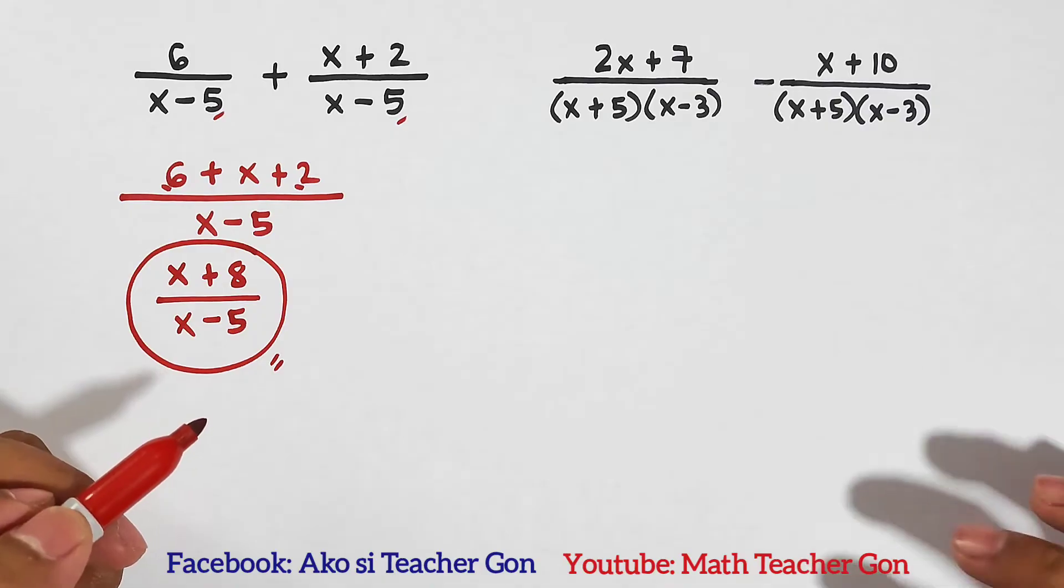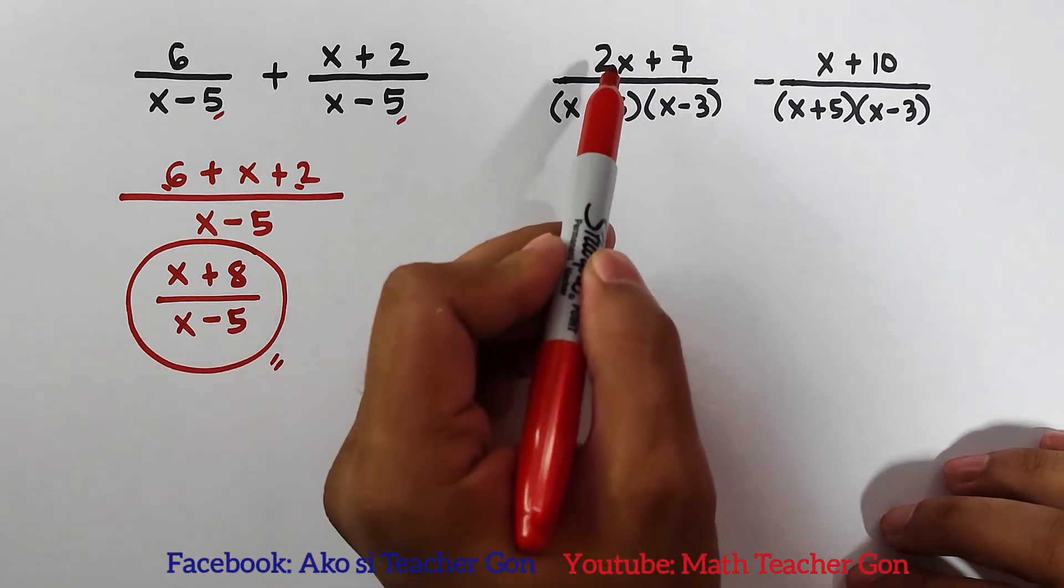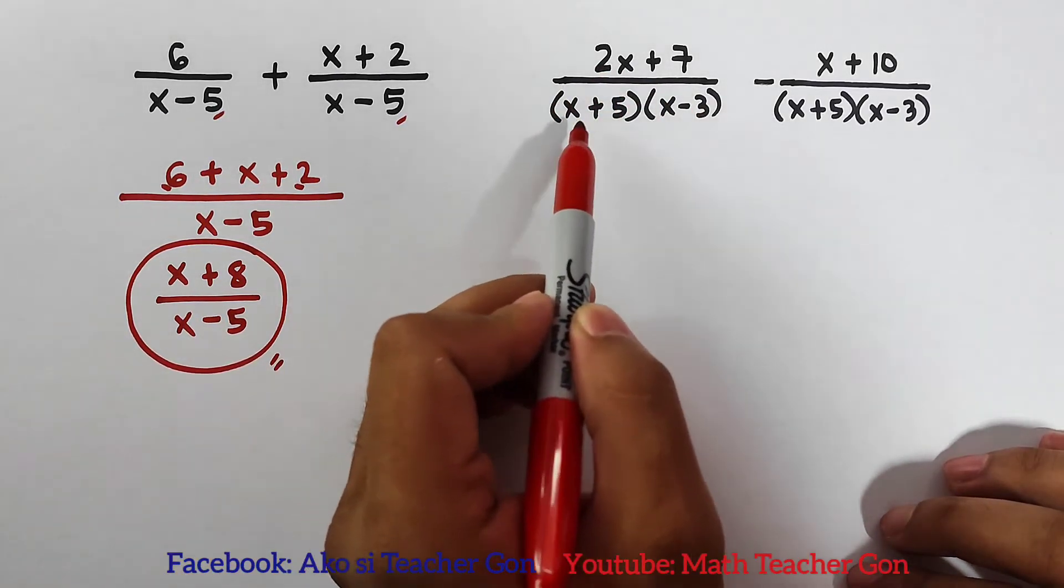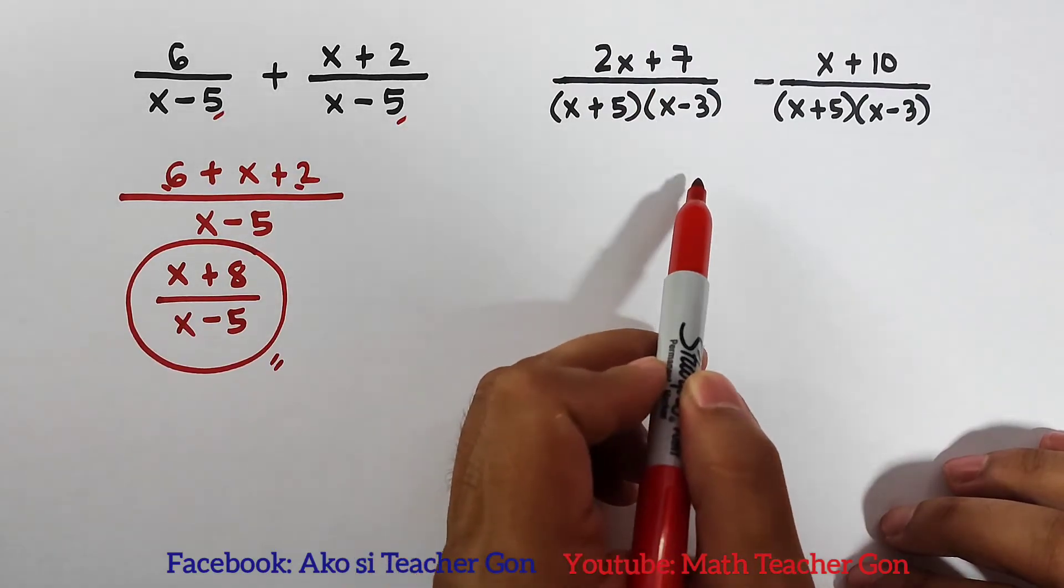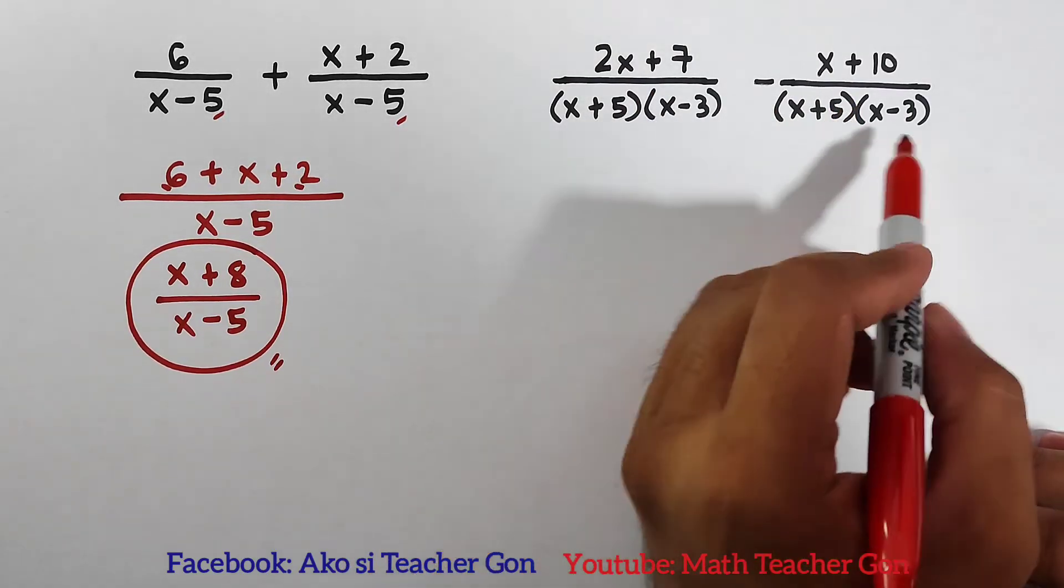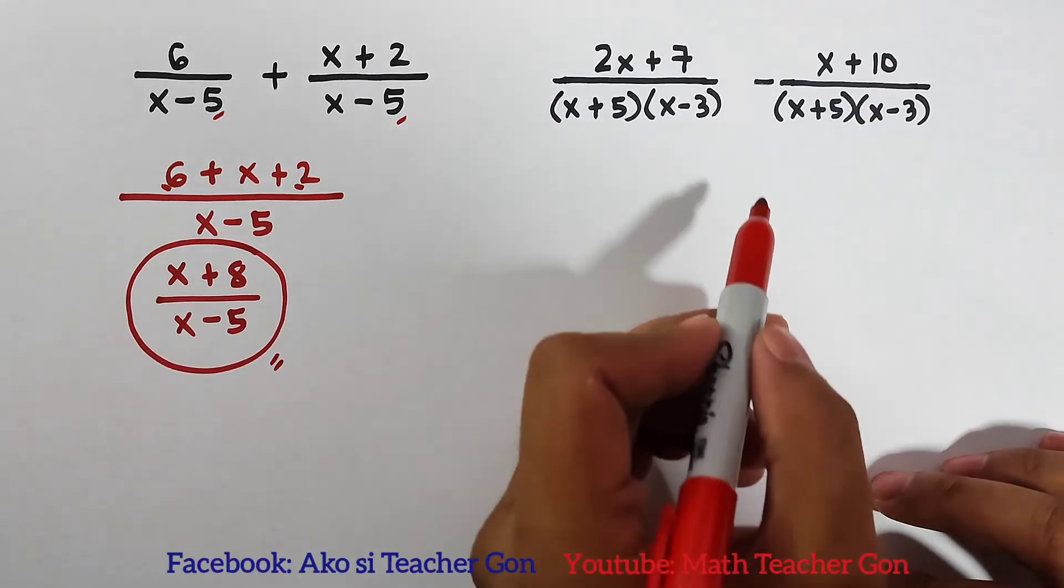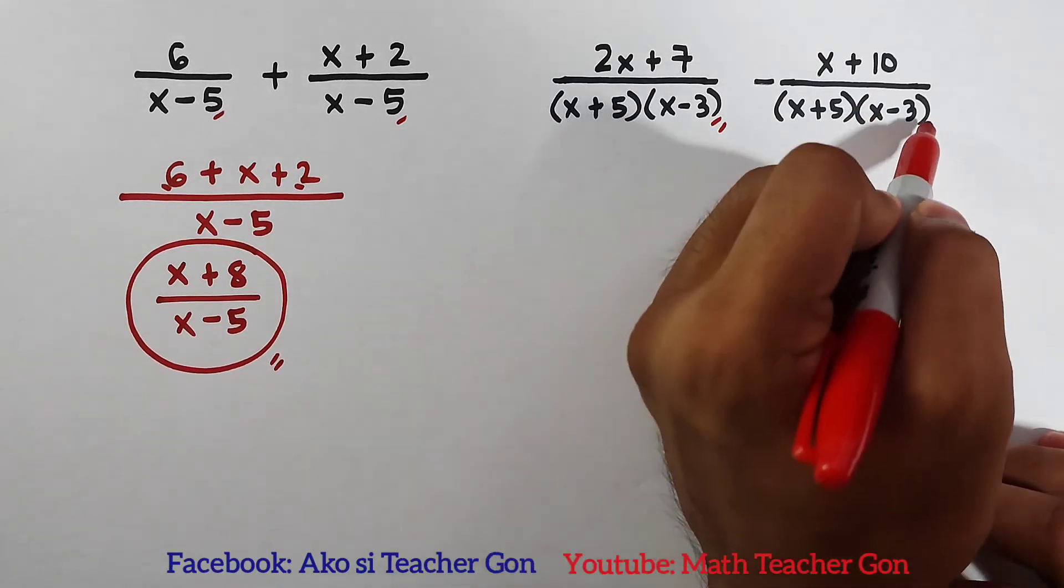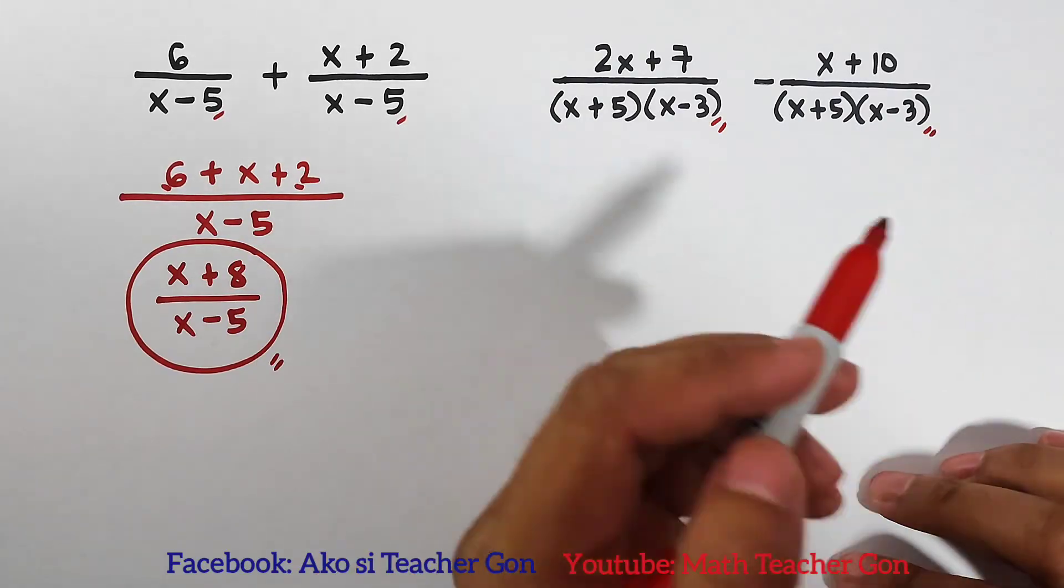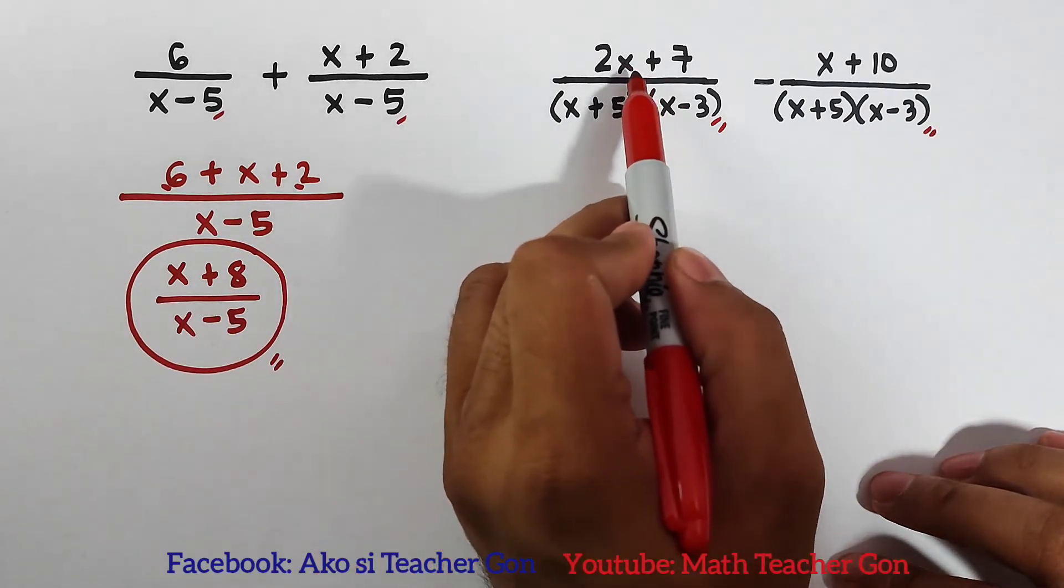Now let's move on with item number two. For number two, we are given 2x plus 7 over (x plus 5)(x minus 3) minus x plus 10 over (x plus 5)(x minus 3). It is confirmed that we have the same denominators, so what we need to do first is we need to subtract the numerators.